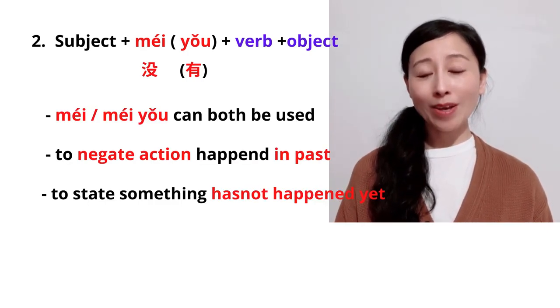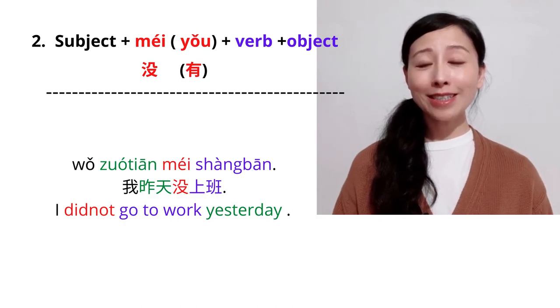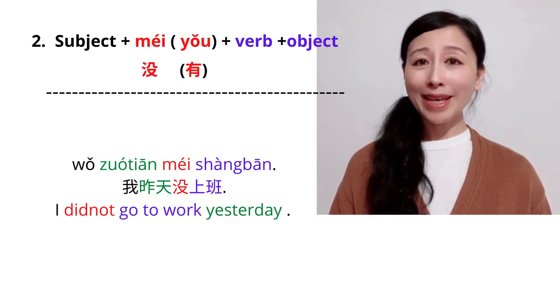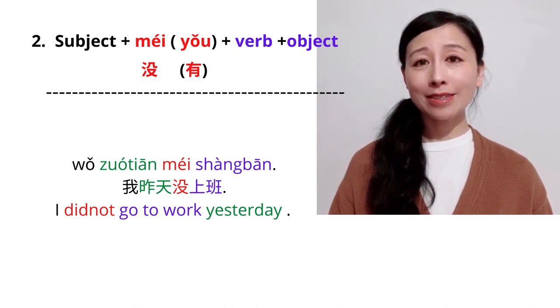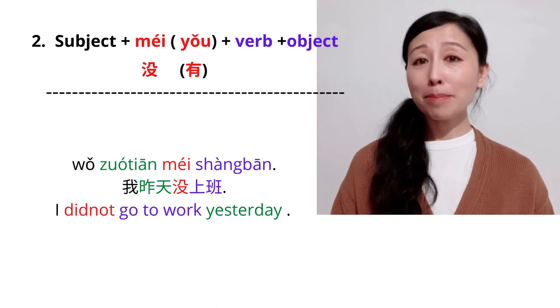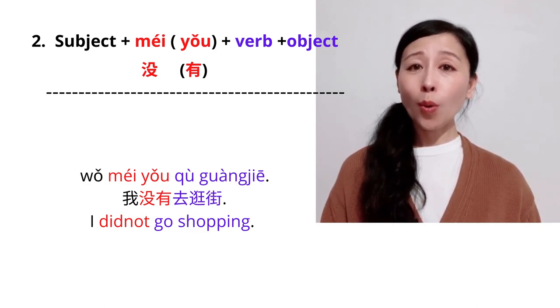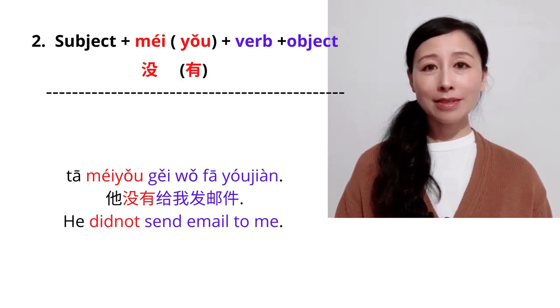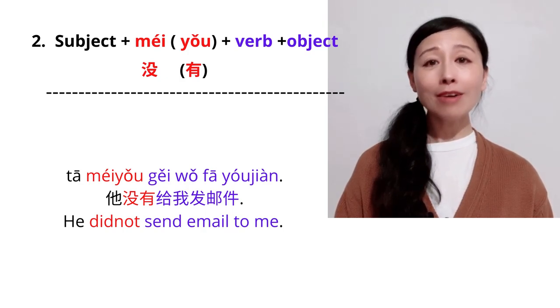The second usage of mei or mei yǒu can both use to negate action that happened in the past or to state that something has not happened yet. The structure is subject plus mei or mei yǒu plus verb plus object. For example, I didn't go to work yesterday. Wǒ zuótiān méi shàngbān. I didn't go shopping. Wǒ méiyǒu guàng jiē. He didn't send an email to me. Tā méiyǒu gěi wǒ fā yóujiàn.